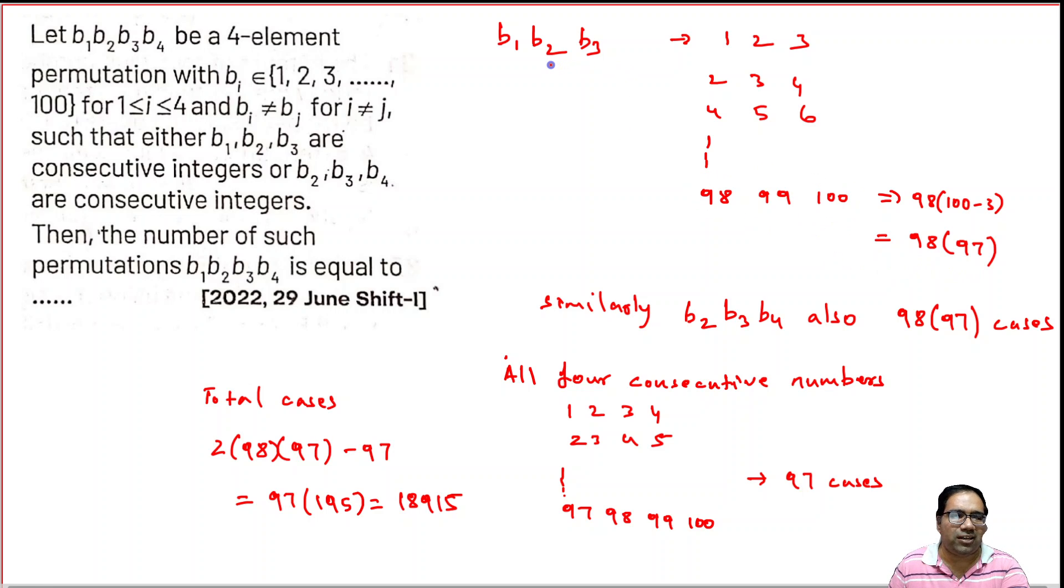By similar logic, if we try for B2, B3, B4 consecutive numbers, by the same logic, we will again get 98 into 97.